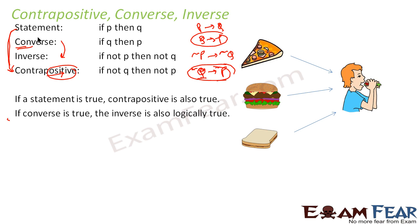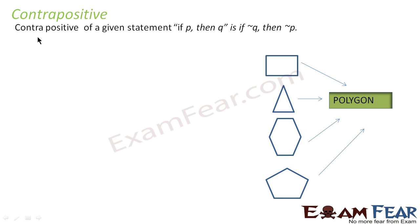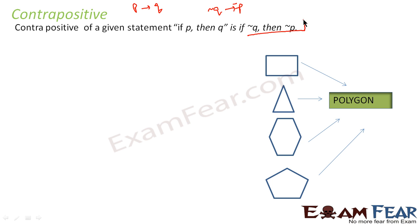Let's understand these in detail with an example. For contrapositive: given the statement p to q, to find the contrapositive we change direction to q to p, and then we add negatives to both sides to maintain the same logic. So the contrapositive of a given statement 'if p then q' is 'if not q, then not p'.